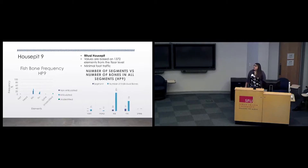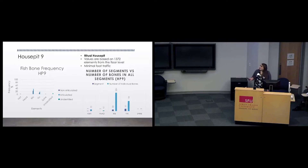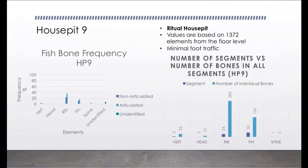The second one we have here is house pit 9, which is believed to be a ritual house pit. This house pit had a total of 1,372 bones and is one of the smallest house pits at the site at about 5 meters in diameter. You can see here that there is a change in the most common bone elements found, from ribs and vertebra to ribs and fin segments. We believe this is important because the ribs and fin segments hold less meat than the rest of the bones in the fish and were being used to produce a fish stock in this house. This house pit also had more prestige goods than other house pits at the site, which is part of the assumption that it is a ritual house pit.